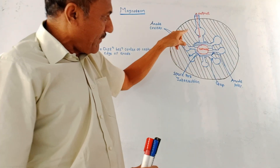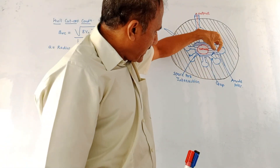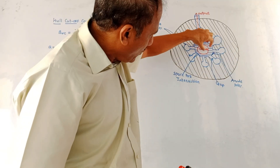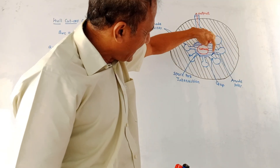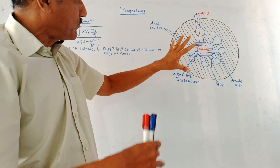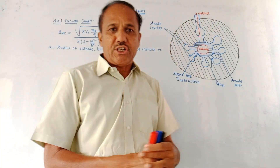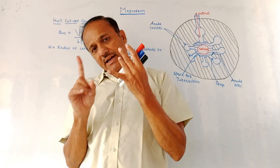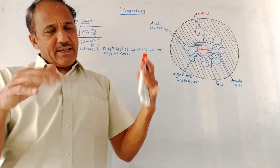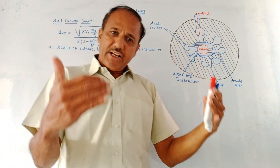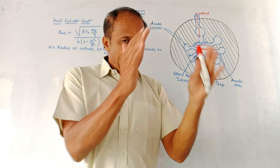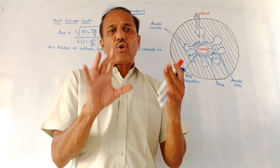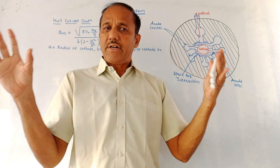Eight anode cavities are shown. This part is called the anode block. Between the cathode and anode block there is the interaction space. The applied electric field is in the radial direction and the magnetic field is perpendicular to this, so this is called a cross-coupled device.